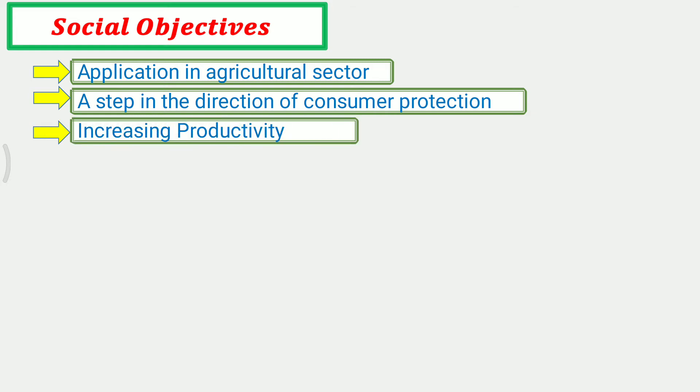The third point is Increasing Productivity. Cost Audit has much role to play in increasing productivity by efficient management of man, material, and efficient utilization of installed capacities of industries. It may ultimately result in improving the economic condition of the common people.